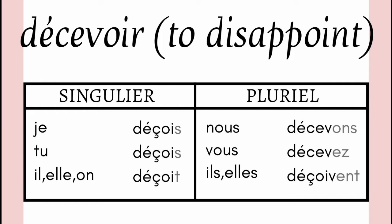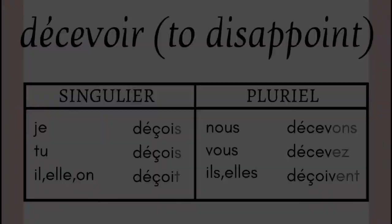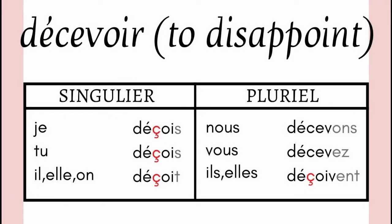Easy. Again the endings are S, S, T, ONS, EZ, ENT. But you have to notice one more thing: in je, tu, il, elle and ils, elles plural, the C has changed — the spelling shifts with a cedilla in the singular and third person plural forms.